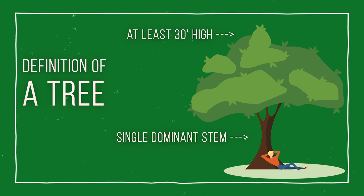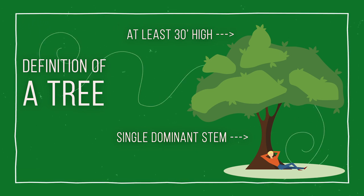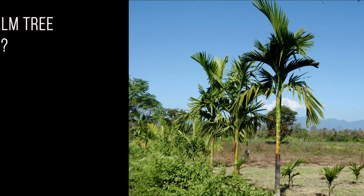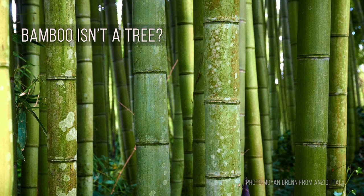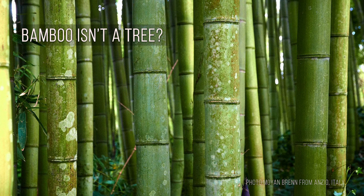How exactly do we define a tree? Well, there are many definitions, but most would say at least 30 feet tall and a single dominant stem. Is a palm tree a tree? Palm trees don't have woody tissue, which is another part of the definition of a tree. So bamboo isn't a tree either? Nope — bamboo is a grass, and it doesn't have woody tissue either.